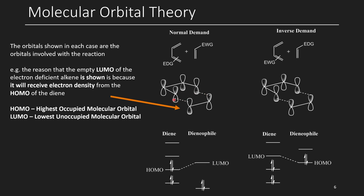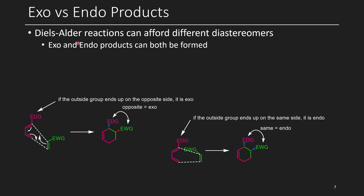Endo versus exo products. When you do a Diels-Alder reaction, you can afford different diastereomers. You can also form different enantiomers, but that can't really be avoided unless you're using some sort of chiral system. The dienophile could have the electron-withdrawing group pointed away from the diene as it approaches. Whether it approaches from above or below is random because there's no control over chirality — it's just going to be a 50-50 mixture of enantiomers, a racemic mixture.